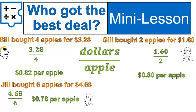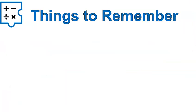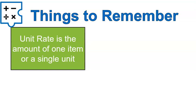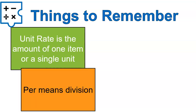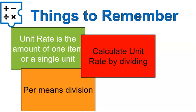A couple of things to remember: unit rate is the amount of a single item or a single unit, and per means division, so you can calculate unit rate by dividing. You can also write it as a ratio over one. I hope this lesson was helpful for you. Make sure to check out the worksheet — practice, practice, practice — and then take the quiz to show us what you know. Have a wonderful day.